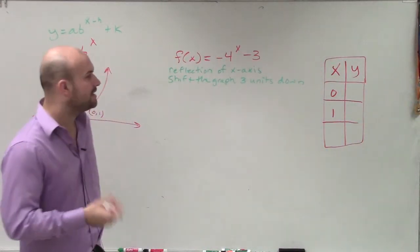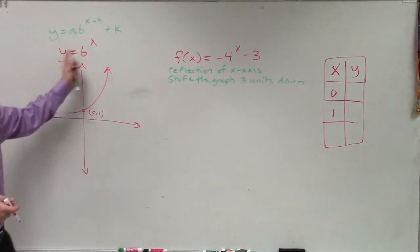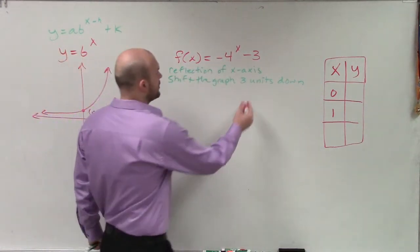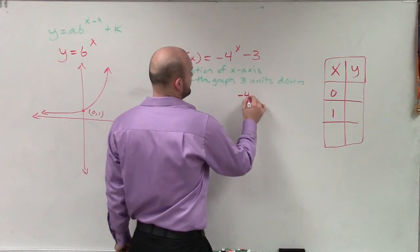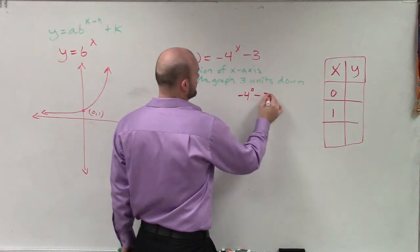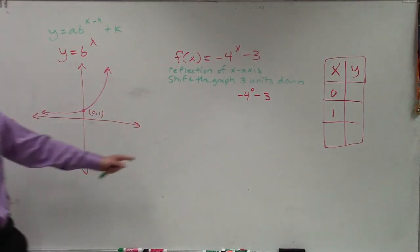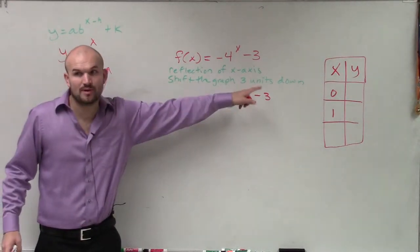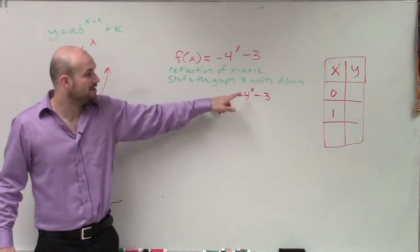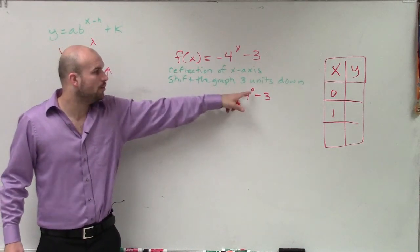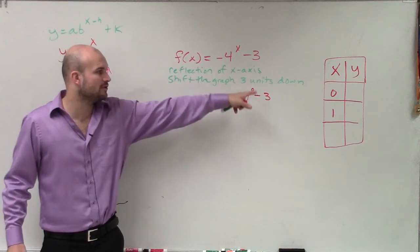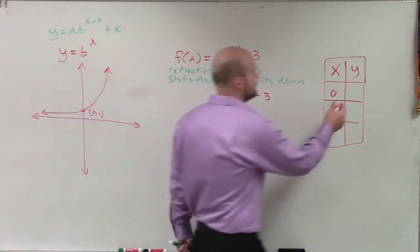Just use 0 and 1. So when we plug in 0 into this case, what I'll have is negative 4 raised to the 0 power minus 3. Now remember, you're raising 4 to the 0 power, then multiplying it by negative 1. So 4 to the 0 power is 1. 1 times negative 1 is now negative 1. Negative 1 minus 3 is going to be negative 4.